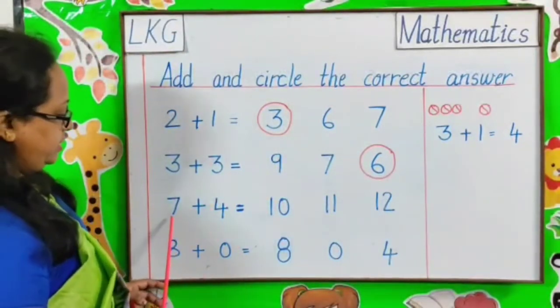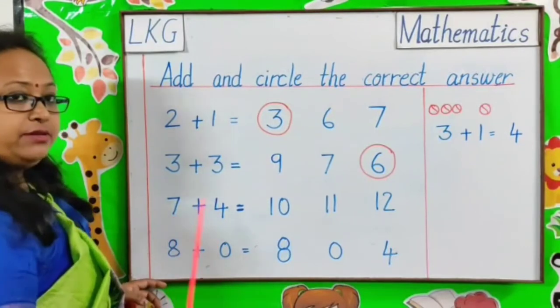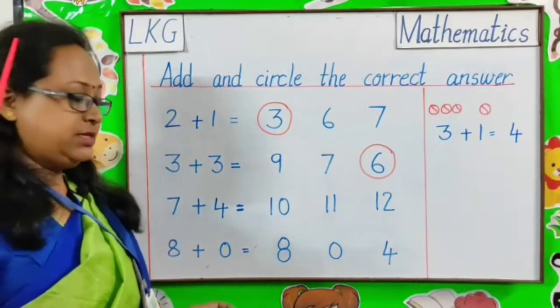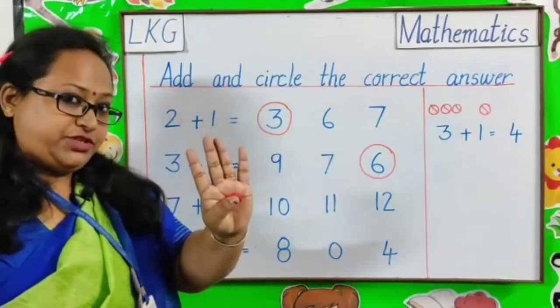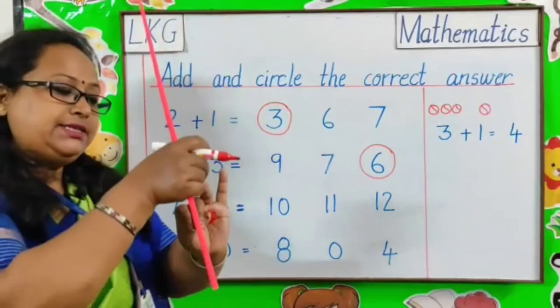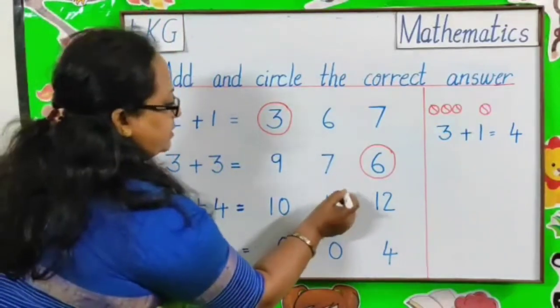Next question. 7 plus 4. 7 in my mind and 4 fingers. 8, 9, 10, and 11. So, correct answer is 11.